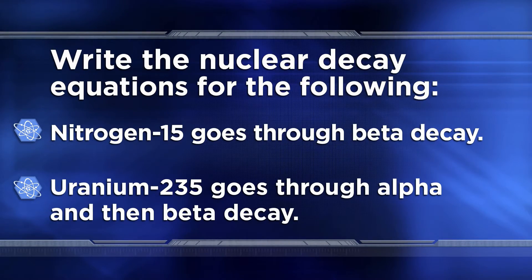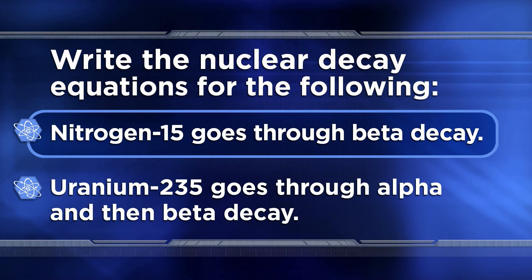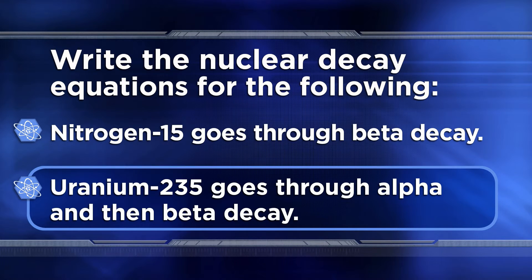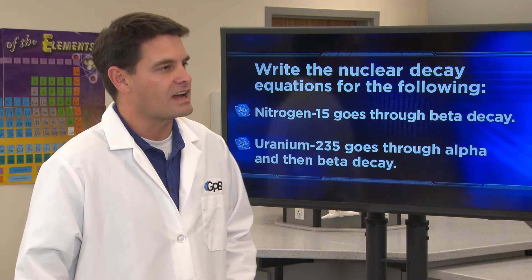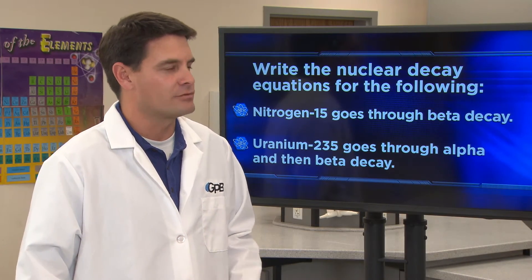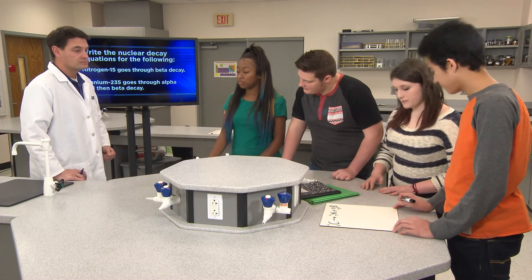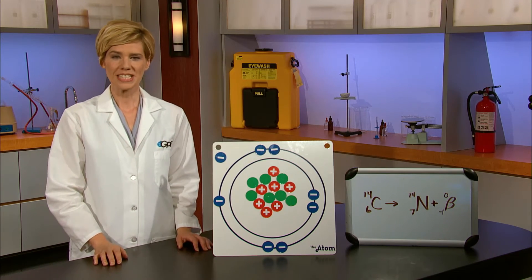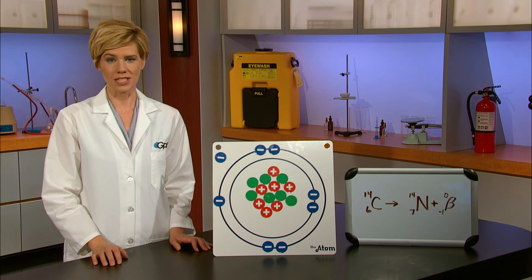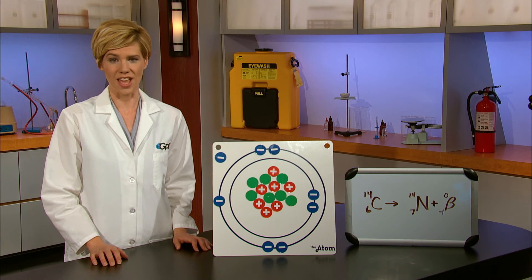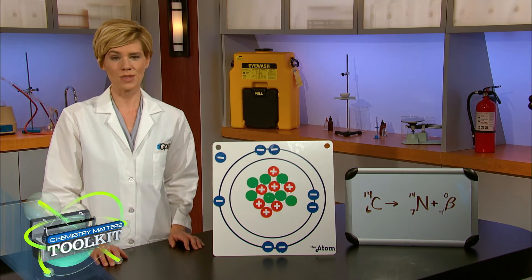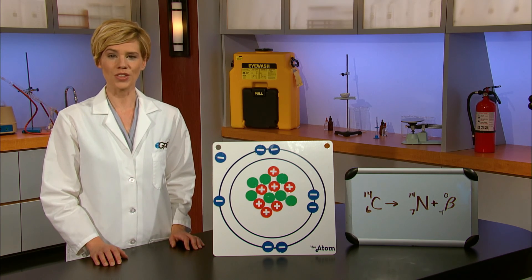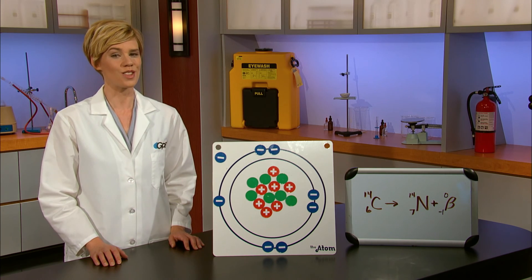Now that you have a better understanding of nuclear decay, try writing the following two nuclear decay equations. First, represent nitrogen-15 going through beta decay. Then, uranium-235 going through alpha and then beta decay. Write the complete nuclear decay equations using isotope notation, and don't forget that both processes will be accompanied by gamma radiation — include that on your board as well. We'll take a break here for practice. Additional problems are available in the Chemistry Matters Toolkit. Join us at the top of the next video on the Unit 11 playlist to see how your equations compare. We'll see you next time.